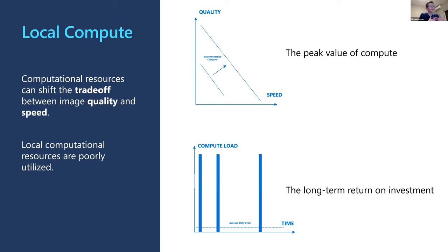The question then becomes: how do I get this compute power to the instrument? The initial urge is to stick it right on the scanner, but you quickly get into territory where you need a lot of compute deployed with your imaging instrument, and it's not very effective. There are times when you need lots of compute right when you're doing your imaging experiment and image reconstruction. But over the lifetime of these instruments, the average duty cycle is actually very, very low. So it's a very ineffective way of deploying this compute.